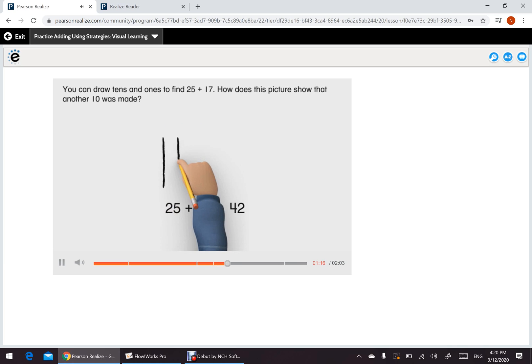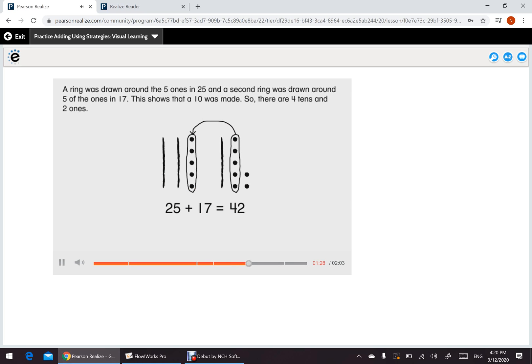You can draw 10s and 1s to find 25 plus 17. How does this picture show that another 10 was made? A ring was drawn around the 5 1's in 25, and a second ring was drawn around 5 of the 1's in 17. This shows that a 10 was made. So, there are 4 10s and 2 1's.